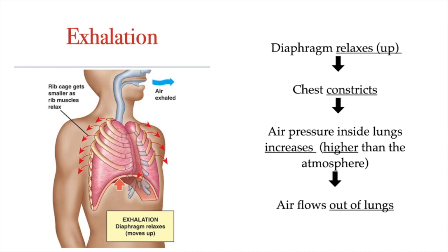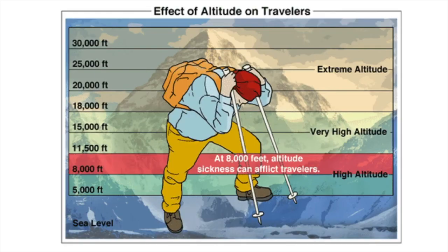Our ability to breathe is affected by both the air pressure in our lungs and the air pressure in the atmosphere. Atmospheric pressure can change, in particular when we change altitude. If you've ever traveled to a high-altitude environment, for example the Andes Mountains or the Himalayas, you will have noticed that at higher altitudes it gets harder to breathe. Some people may even get altitude sickness, and at even higher altitudes like the top of Mount Everest, they may die.